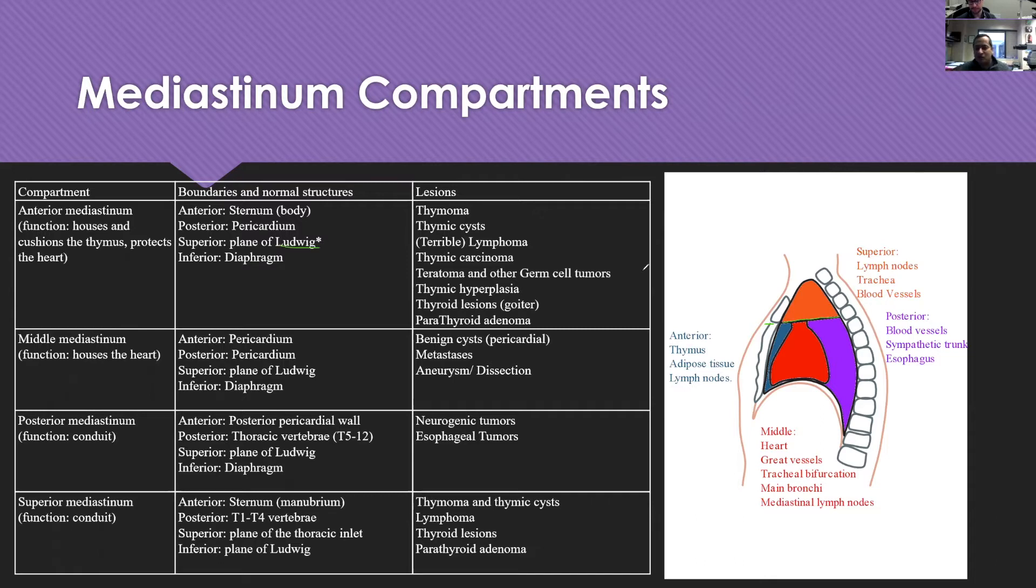The plane of Ludwig separates the superior mediastinum, which is the orange cone or triangle, from the inferior mediastinum. The inferior mediastinum is what we typically divide into anterior, middle, and posterior. It's not the mediastinum that's divided into anterior, middle, and posterior, but the inferior mediastinum.